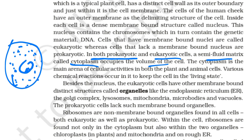The cytoplasm is the main area of cellular activities in both plant and animal cells. Besides the nucleus, the eukaryotic cells have outer membrane-bound distinct structures called organelles — these are the cell organelles.